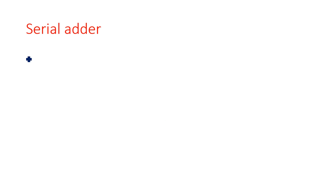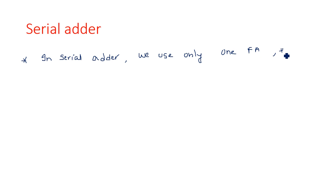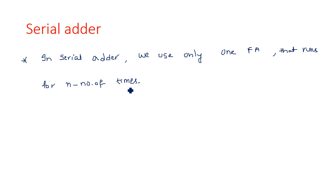In a serial adder, we use only one full adder that runs for n number of times. This is quite in contrast with parallel adders. In parallel adders, however many inputs there are, that many full adders are used. But here, only one full adder is used regardless of the input size. If the input is 10-bit, 100-bit, or 1000-bit, the single full adder remains the same.